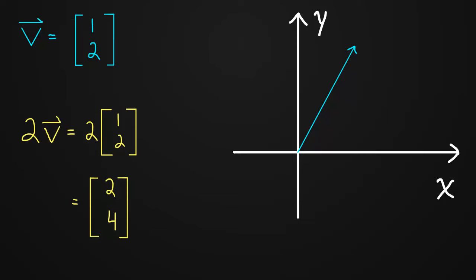There's nothing fancy about that. We could also check out what happens when we take v and we multiply by a half. It makes it half as big, half as long.